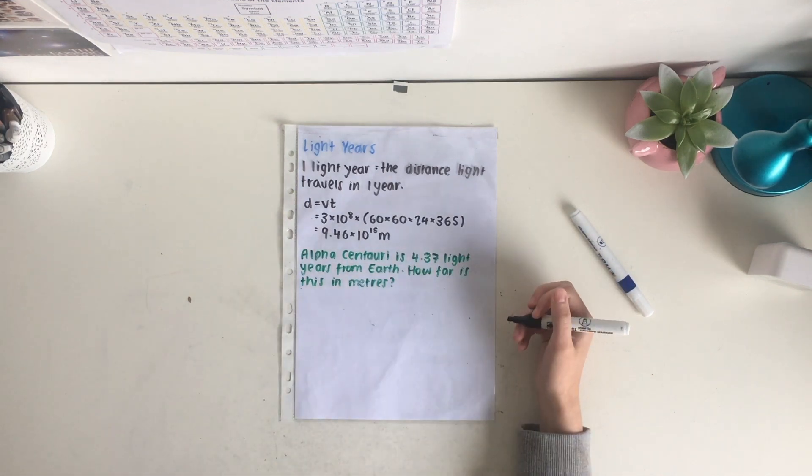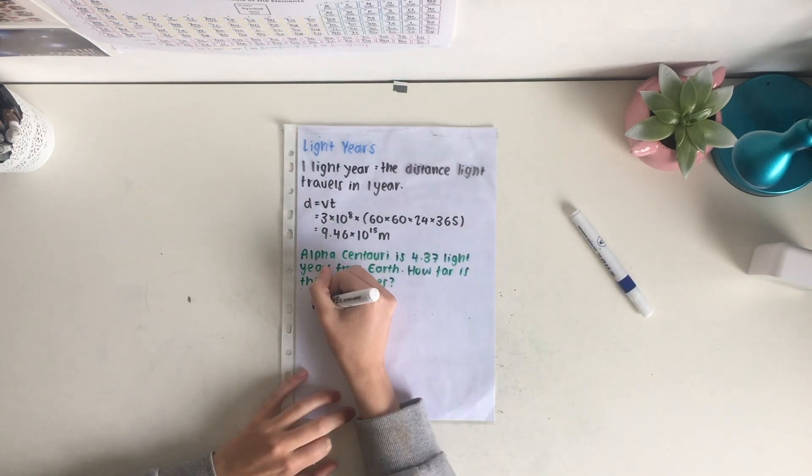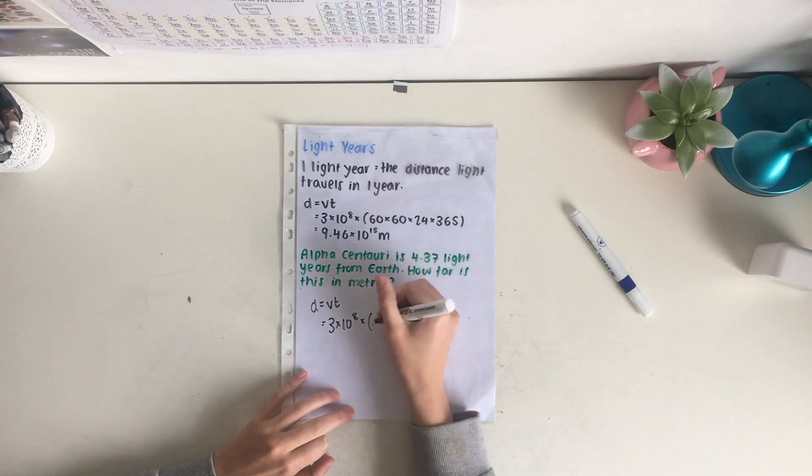Here we first need to work out the distance that a light year is, so we'll work out to show our working. d equals vt. Our speed of light is 3 times 10 to the 8, and then we need to work out our time in seconds.